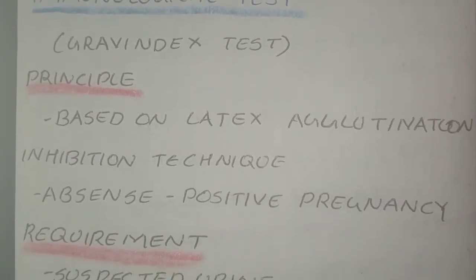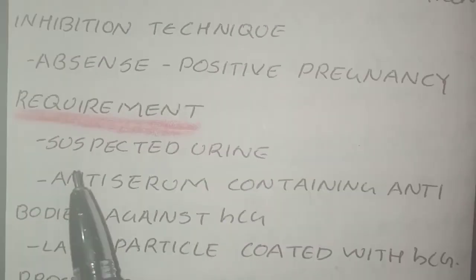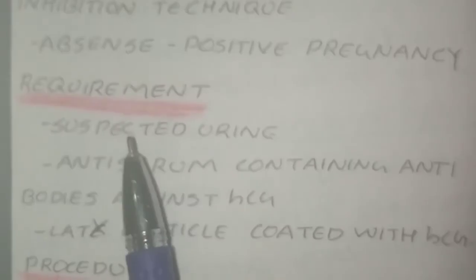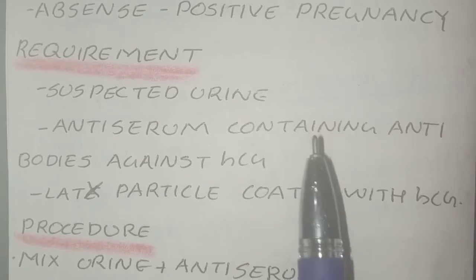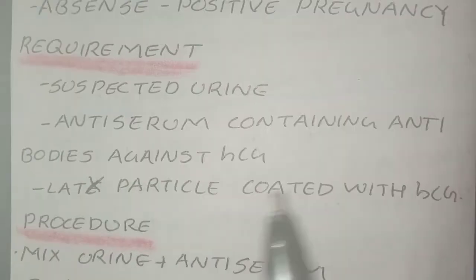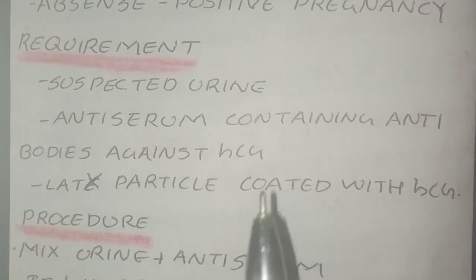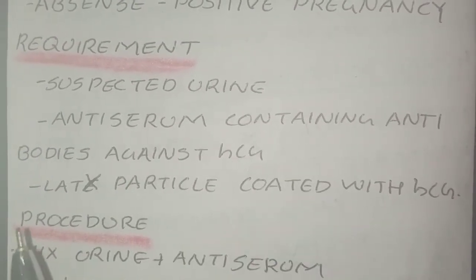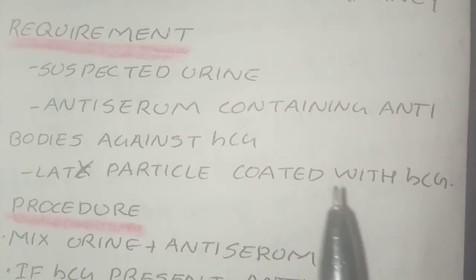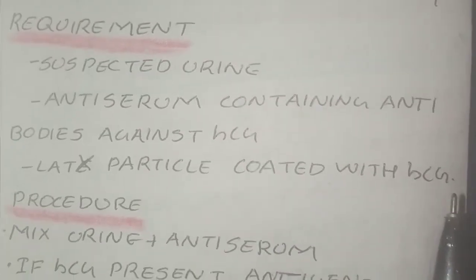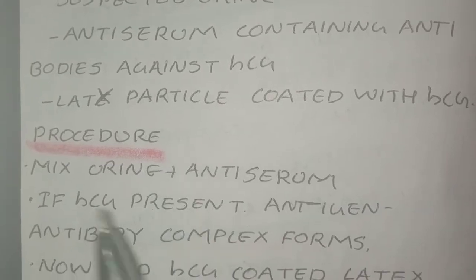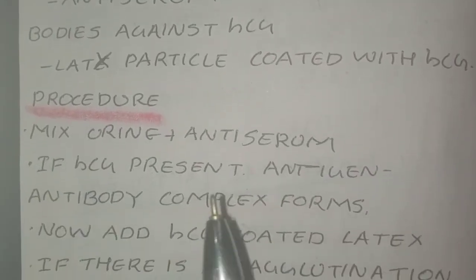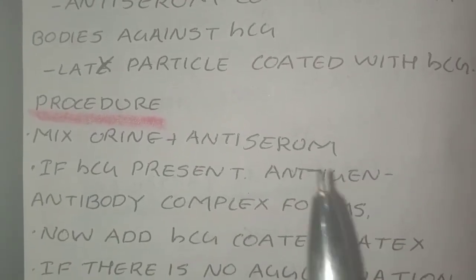Absence of agglutination indicates a positive pregnancy. The requirements for this test are: the suspected urine of the female, anti-serum containing antibodies against HCG, and latex particles coated with HCG.